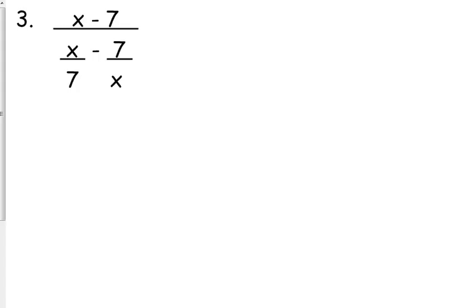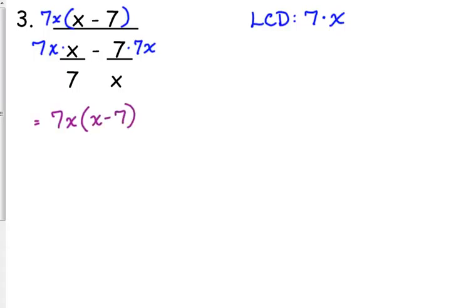Okay, so we have three expressions. Only two of them have denominators, and this one's a little different because our denominators are just monomials. They're not like linear factors, so it's very simplistic here. Our LCD is just 7 times x, so multiply each of these by 7x. For the numerator, it didn't have a denominator, so it's just 7x times x minus 7.